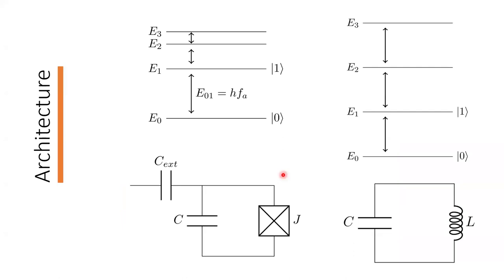Now that we understand superconductivity, we can take advantage of it. Qubits are designed by implementing a non-linear LC circuit, as shown in the diagram. The term non-linear refers to the fact that the separation between energy levels is non-uniform — as opposed to a linear LC circuit where the difference between each energy level is the same. The states of the qubit — |0⟩ and |1⟩ — correspond to the energy states of the circuit.